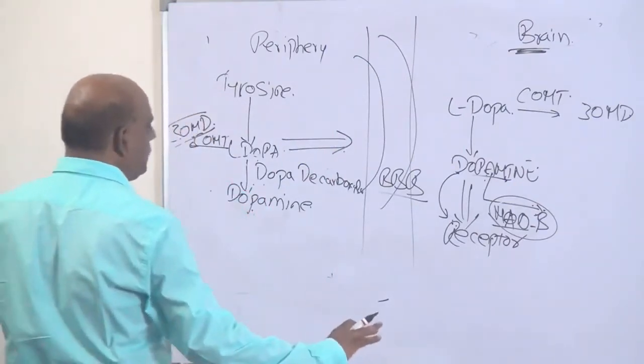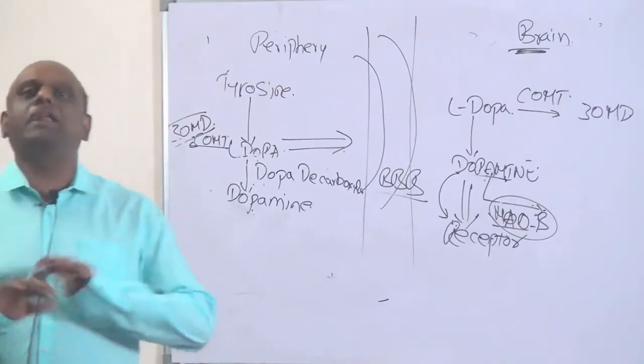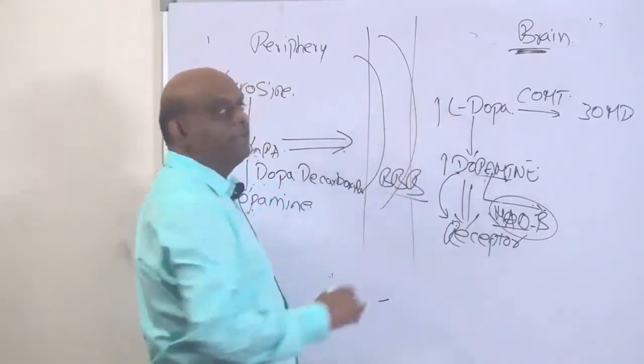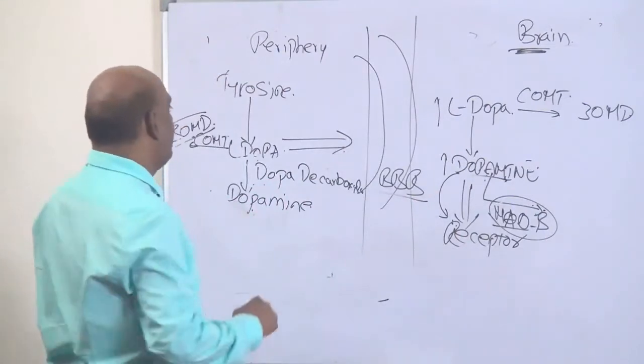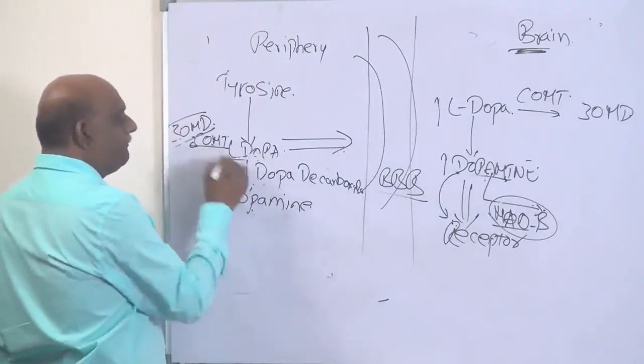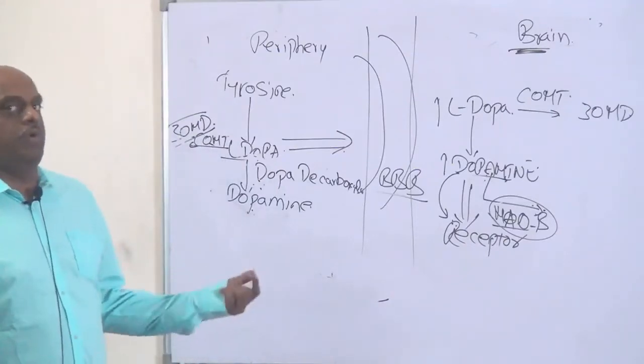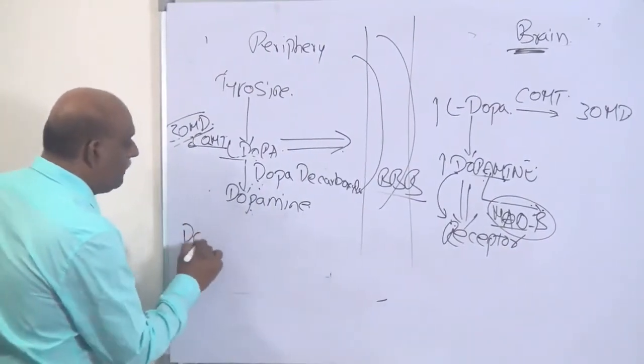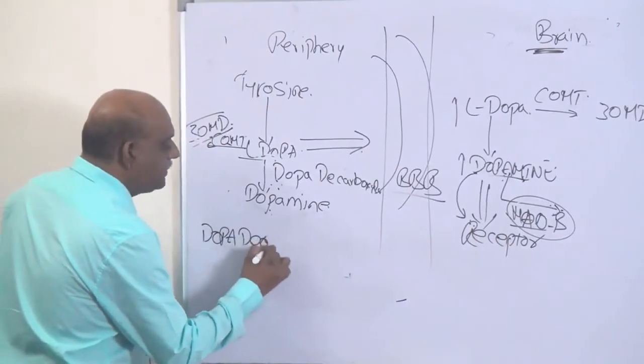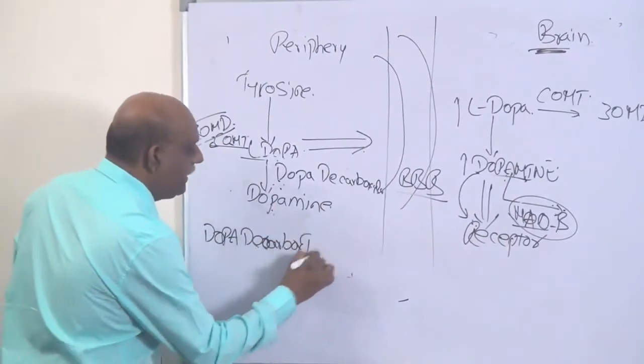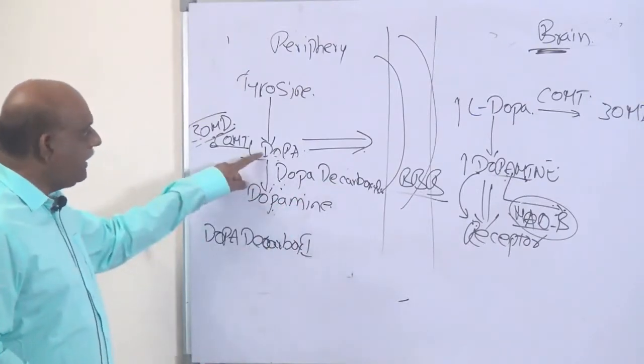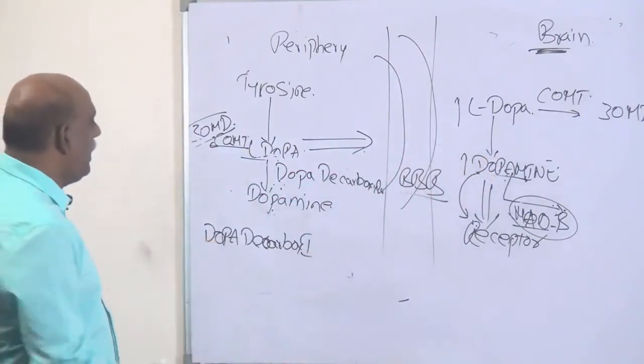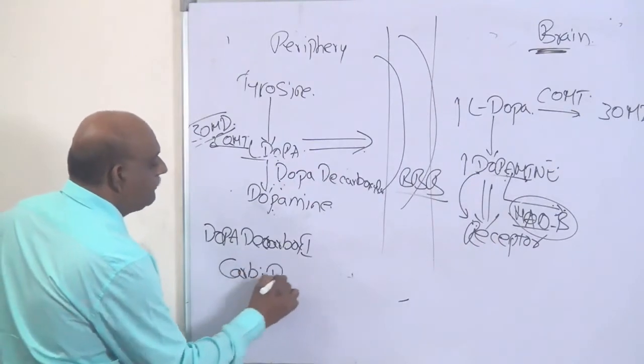So once you know this, you know the entire story of Parkinsonism drugs. So how are you going to increase the dopamine? Either you increase the L-dopa in the brain from getting metabolized or you increase the L-dopa from getting destroyed in the periphery. So accordingly, how many kinds of drugs do you have? Number one: dopa decarboxylase inhibitors. If you inhibit the dopa decarboxylase, L-dopa can go into the brain more. And we want it to go into the brain. So you have a drug called carbidopa for this purpose.